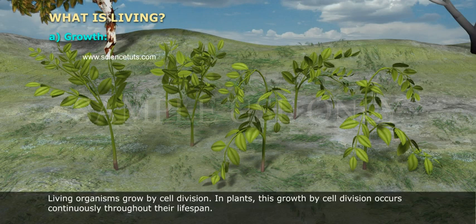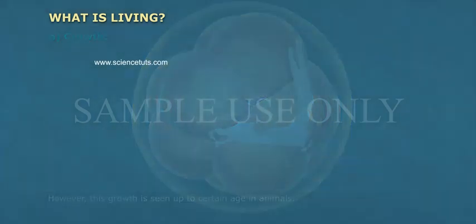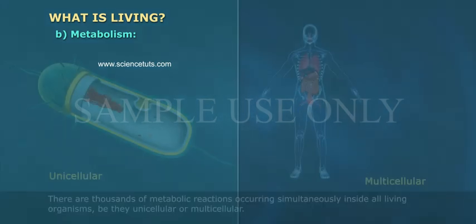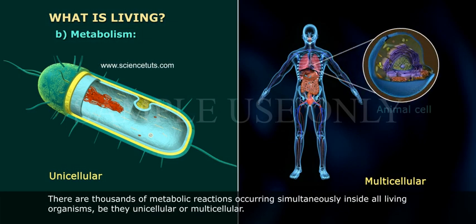Growth: living organisms grow by cell division. In plants, this growth by cell division occurs continuously throughout their lifespan. However, this growth is seen only up to a certain age in animals.